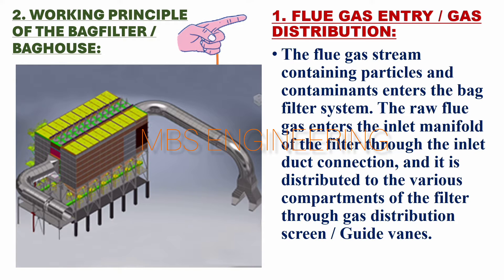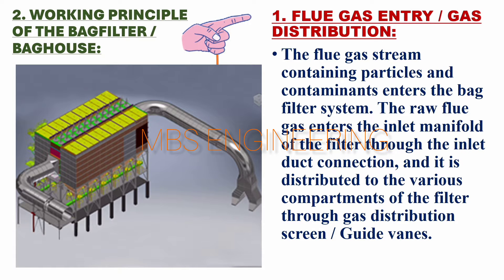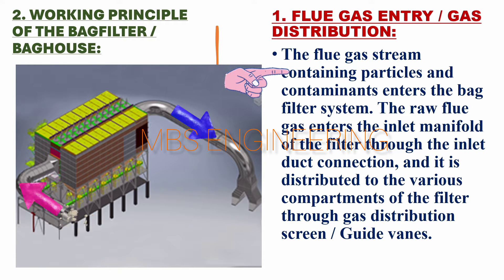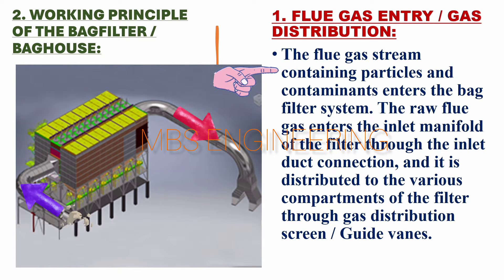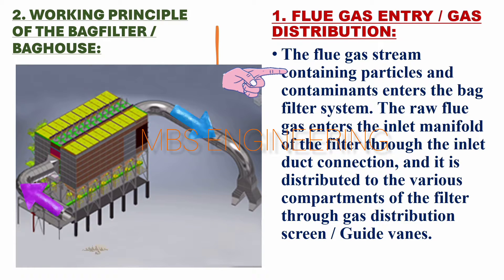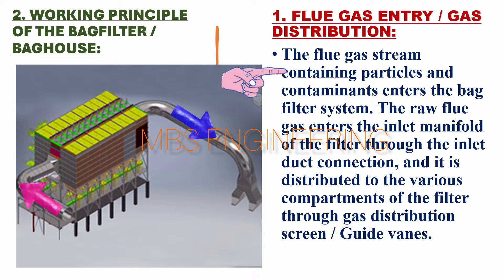Step 1 — Flue Gas Entry: The flue gas stream containing particles and contaminants enters the bag filter system. The raw flue gas enters the inlet manifold of the filter through the inlet duct connection, and it is distributed to the various compartments of the filter through a gas distribution screen and guide vanes.